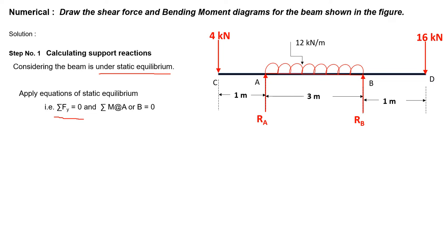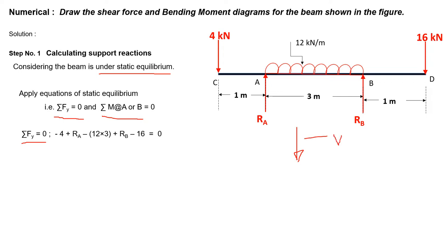We can apply equations of static equilibrium. Those equations are: summation of all forces along the y-direction (vertical direction) is equal to zero, and summation of moments at support A or support B is equal to zero. We have to calculate the moment of all the forces about the reference point, which will be support B or support A. One sign convention: forces acting vertically downward are taken as negative, and forces acting vertically upward are taken as positive.